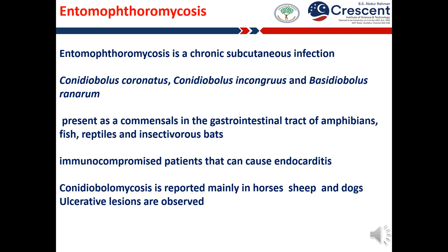Conidiobolomycosis is also an example of fungal-mediated zoonosis. It is a chronic subcutaneous infection caused by Conidiobolus species. This fungus is present as a common soil organism and in the gastrointestinal tract of amphibians, fishes, reptiles and insectivorous bats. In immunocompromised patients, this fungus can cause endocarditis. Conidiobolomycosis is reported mainly in horses, sheep and dogs, and this fungus causes ulcerative lesions in mammalian species.